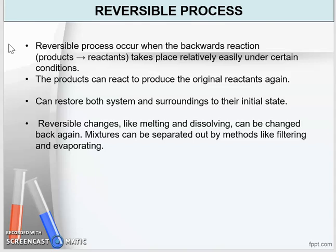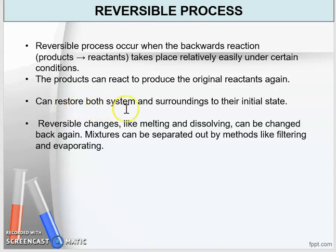A reversible process occurs when the backwards reaction takes place relatively easily — meaning that products can form the reactants again under certain conditions. This process can also restore both the system and its surroundings to their initial state. Examples of reversible changes include melting and dissolving, which can be changed back again.